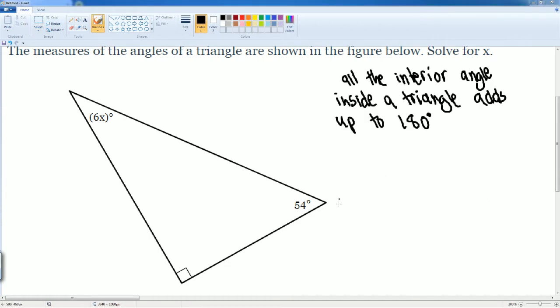we are allowed to set up the equation. So we have 6x which is this angle here. Then we have the 90 degree angle right here plus 90 plus this angle of 54 and we set that equal to 180.